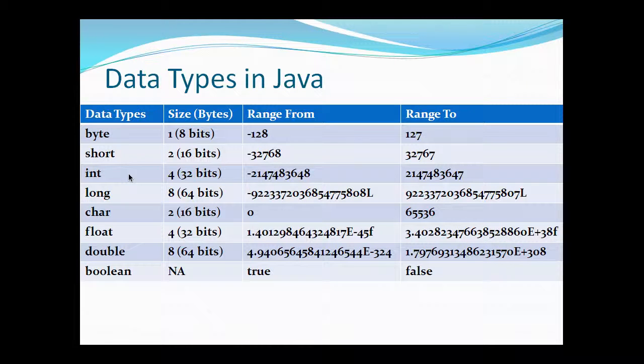Similarly, as we go down, the size is getting doubled. From byte it was one byte, short doubled to two bytes, int doubled to four bytes, and long has eight bytes.